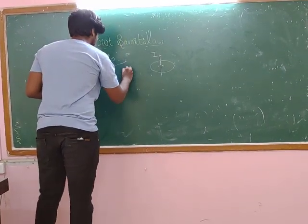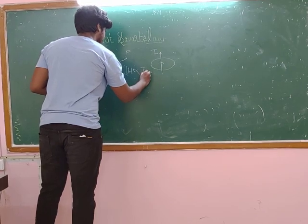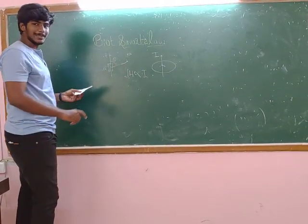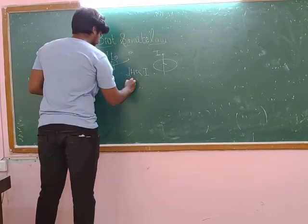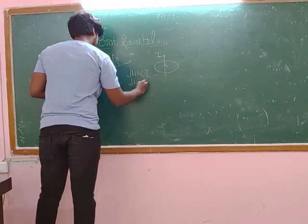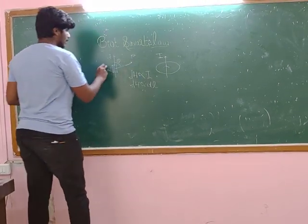Biot-Savart's law states that dB is directly proportional to current I and also directly proportional to the length dL.